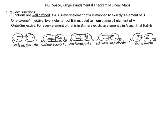To be onto, for every element b in set B there must exist an element a in set A such that f(a) equals b. One example is not onto because there is an element in B with nothing in A mapping to it. Another is onto because every element in B has at least one element in A mapped to it — even if one point has two elements, it still satisfies the condition.